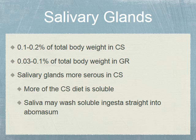Since concentrate selectors have larger salivary glands, they can bind those tannins and ultimately the protein is accessible to the animal. The salivary glands are more serous in concentrate selectors — meaning more fluid — because the saliva needs to wash the ingesta through the digestive tract relatively quickly, since their diet consists of a more soluble plant fraction compared to grazers.